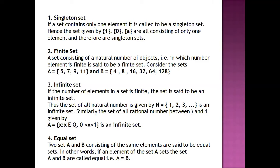If A has mango, banana, and orange, and similarly B also has mango, banana, and orange, then because the elements of both sets are equal, it will be called an equal set.